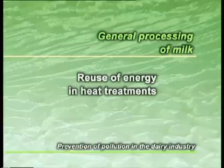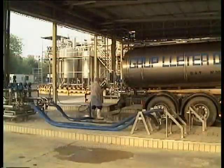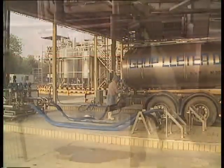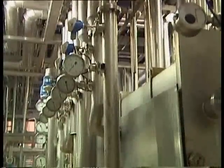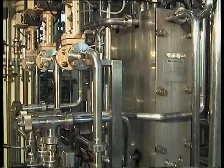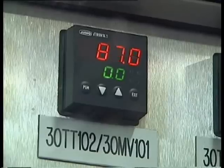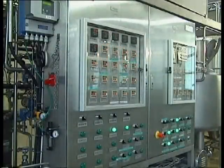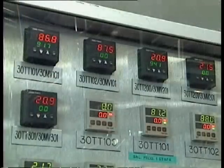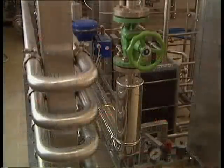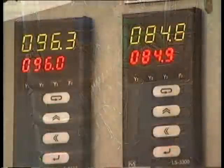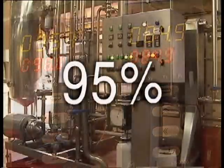Reuse of energy in heat treatments. The total or partial elimination of milk microorganisms can be obtained from pasteurization, sterilization or UHT treatment. These treatments maintain the milk at different temperatures for specific periods of time. The use of heat treatment equipment with recovery sections that use energy from the heated product to heat the cold product allows us to save up to 95% of the energy used during the process.